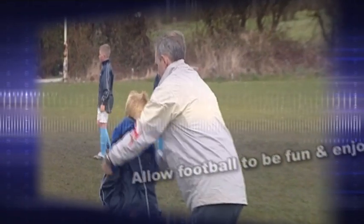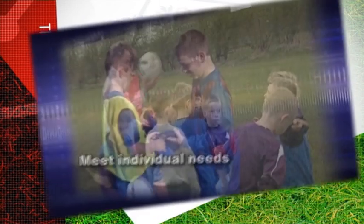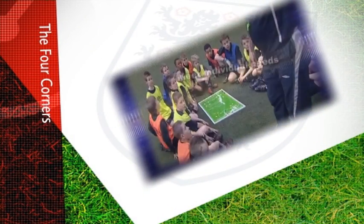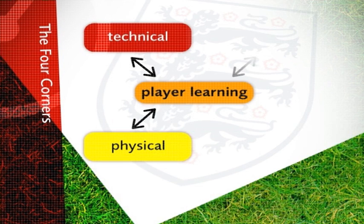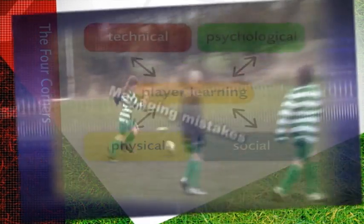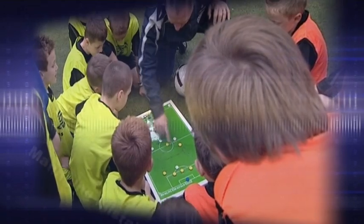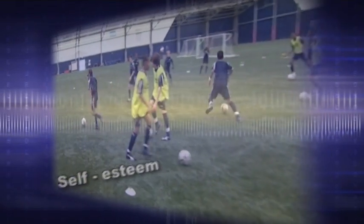Module 1 of the FA Youth Award started us off on a journey into a deeper understanding of coaching young players by looking at the players holistically in the four corners of development: technical, physical, psychological and social, and developing the right environment in which these players can practice and play matches. In order to understand the coaching of young players, coaches need to understand the players as well as the game itself, and this is what Module 1 sets out to do.